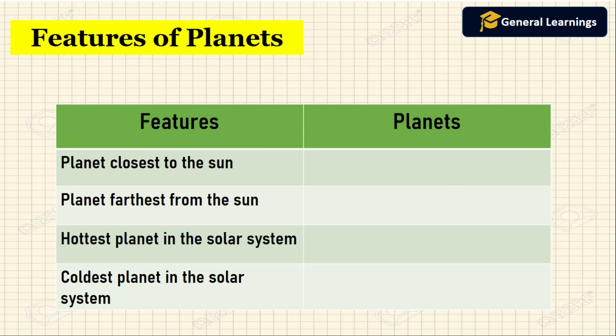Now we will see some of the features of the planets. The planet closest to the sun is Mercury. The planet farthest from the sun is Neptune. Hottest planet in the solar system is Venus. The coldest planet in the solar system is Neptune.